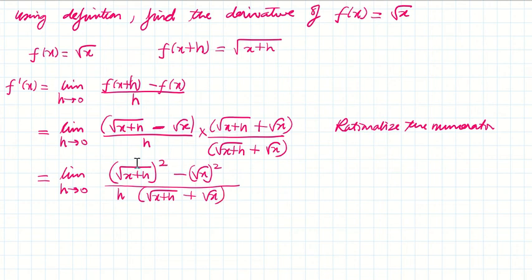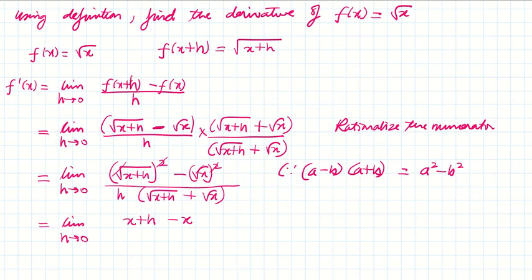Now the square and square root will cancel off. Limit as h tends to zero. I'm just writing the formula for people who don't know: (a+b)(a-b) = a² - b². That's the formula I've applied.